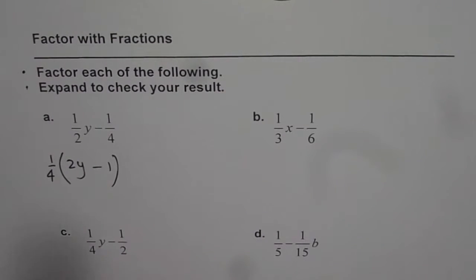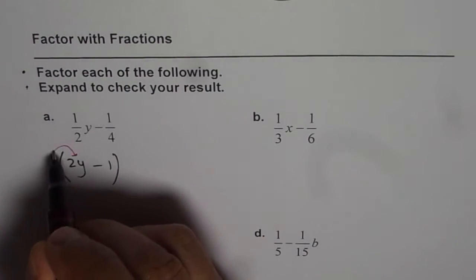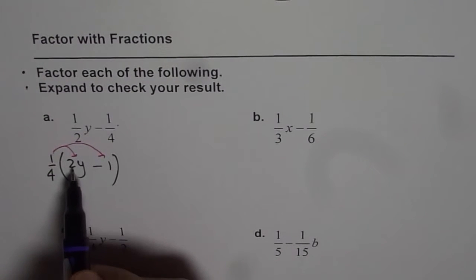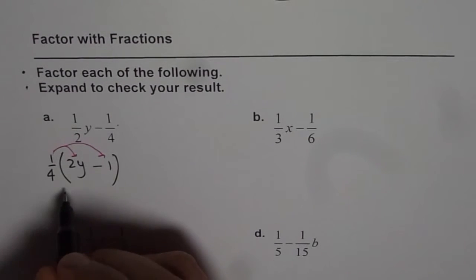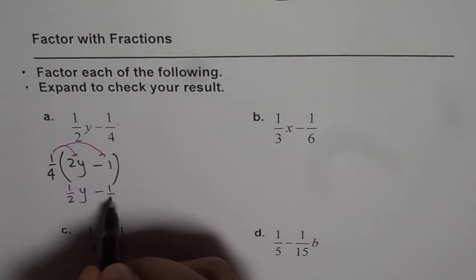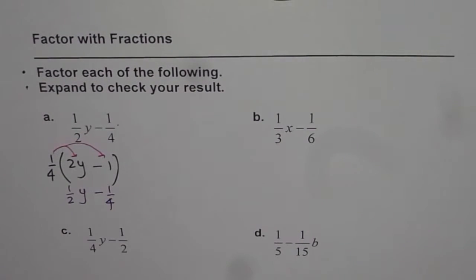To check our result, we can apply the distributive property and verify it gives us the same expression. 1/4 of 2 means two divided by four, which equals 1/2. So you get 1/2y, and 1/4 times minus one is indeed -1/4. That is correct.